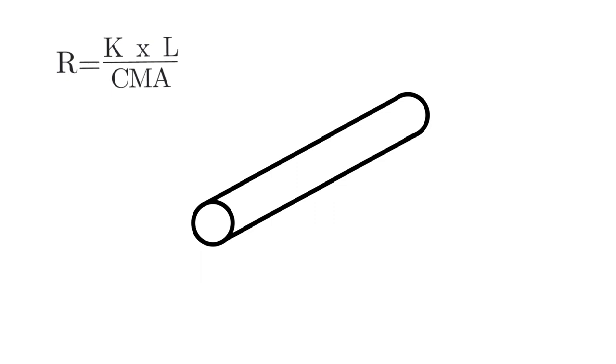When we're calculating out the resistance of a conductor, we can use this formula: R is equal to K times L over CMA. R is the resistance. K works out to be the constant of the natural resistance or the resistivity of the wire, depending on what the medium is, whether it's aluminum or copper would be the two most typical ones that we use.